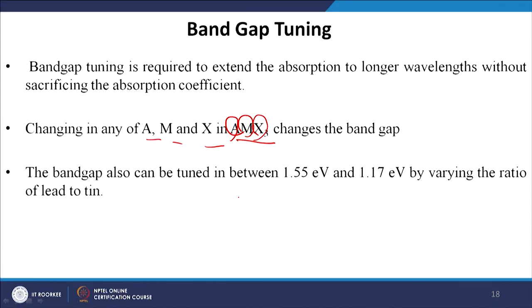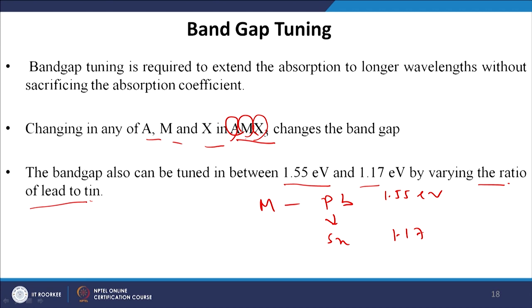For example, the band gap can be tuned between 1.55 eV and 1.17 eV by varying the ratio of lead to tin. If the M cation is changed from lead to tin, the band gap changes from 1.55 eV to 1.77 eV — a lower band gap material that can absorb in the near-infrared range. However, the problem with tin-based compounds is that they are not very stable; tin makes oxide at ambient temperatures and becomes very unstable. So although tin-based compounds have a lower band gap, they are not very useful for fabricating high efficiency devices.